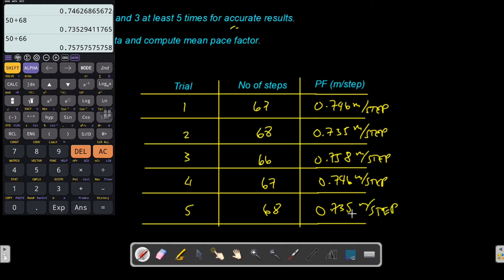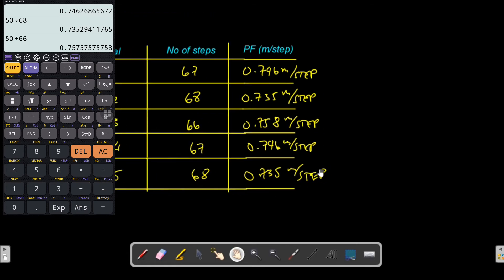For the mean pace factor, just get the average from all the trials. PF mean is equivalent to 0.746 plus 0.735 plus 0.758 plus 0.746 plus 0.735 divided by 5.